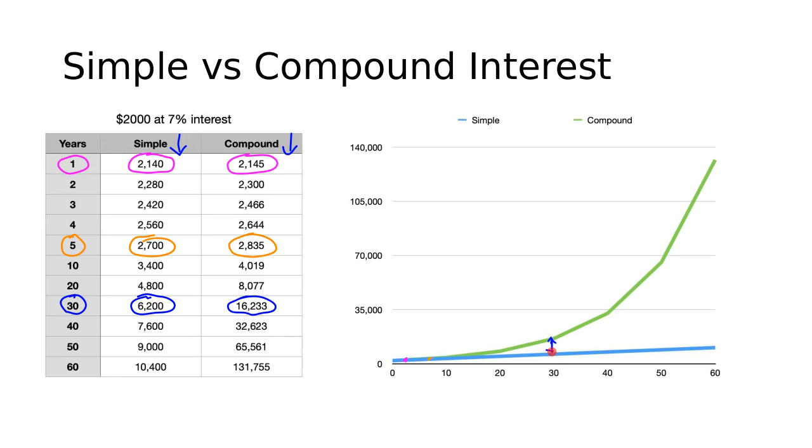Now, we're starting to see a difference in these values. And as we continue, what happens here is the line created by the linear model that is simple interest turns out to be very different than the curve created when we have exponential growth. And the key here is that exponential growth will really take off versus linear growth, which just stays consistent the whole time.